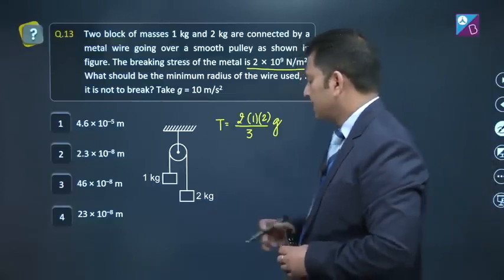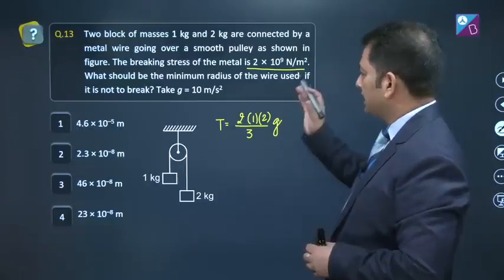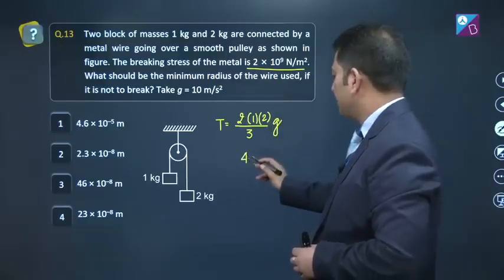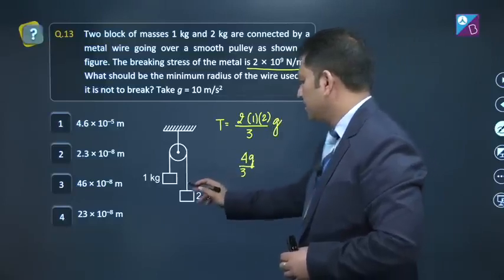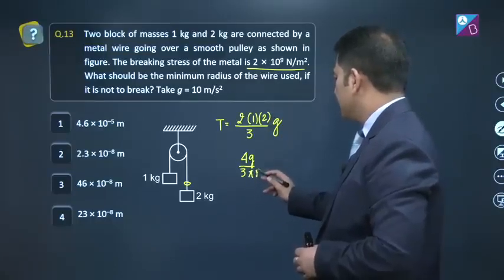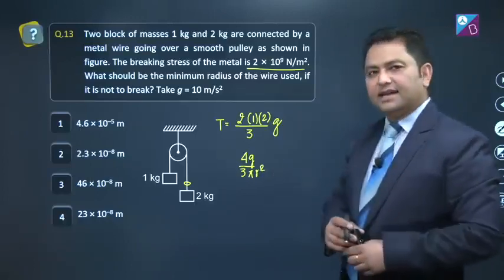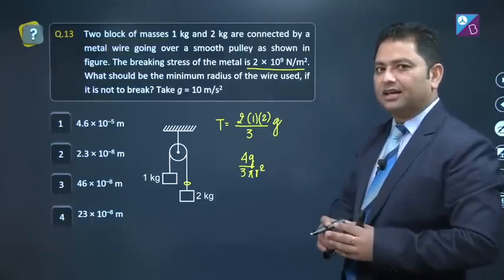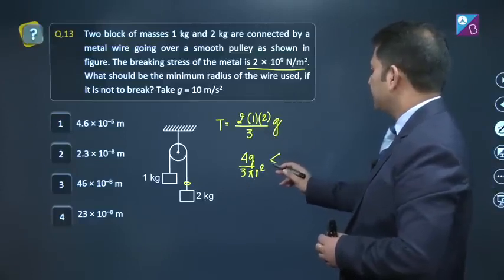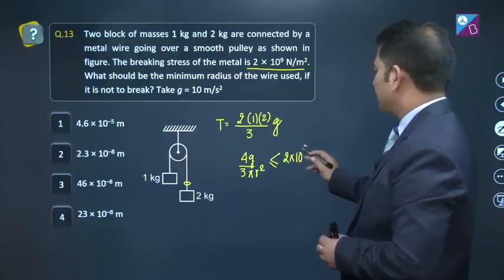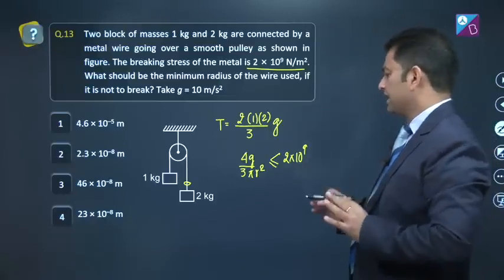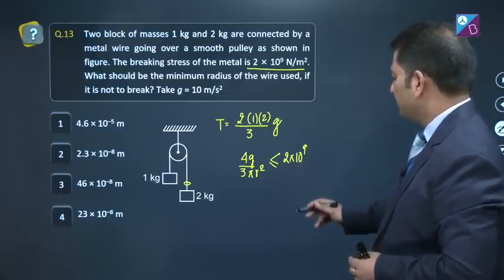Now, this is the tension acting on the wire, and we have to note that the breaking stress of the wire is this much. So let's do: 4g by 3, this is force on the wire, divided by the cross sectional area pi r square. On doing this, I get the stress generated on the wire. The wire should not break, meaning this stress has to be less than, or in limiting condition, just equal to 2 into 10 raise to the power 9. Equal means limiting condition, that's the maximum value.